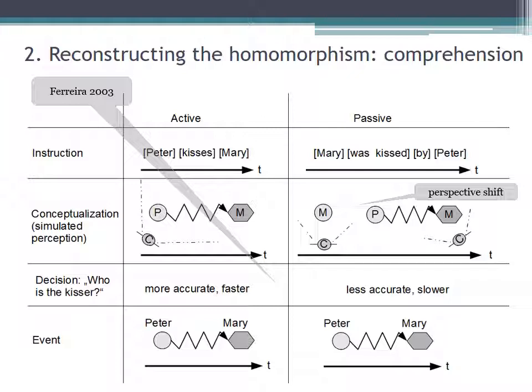Comparing this to the interpretation of a passive sentence, the latter is more complicated. When hearing Mary, the interpreter will predictively establish the concept of Mary as a trajectory. When he encounters that the construction is an instance of a passive, he has to shift perspective to Peter and then follow the trajectory of Peter's activity towards Mary. This leads to a delay and decreased accuracy in the interpreter's ability to decide who is the kisser. The reason is that in order to comprehend the passive sentence, the interpreter has to conceptualize the event in the natural order first, which is reversed in the linguistic instruction here.